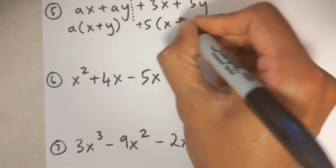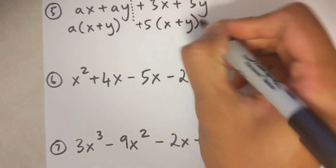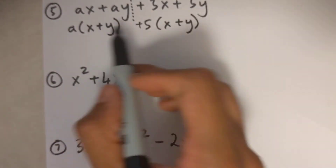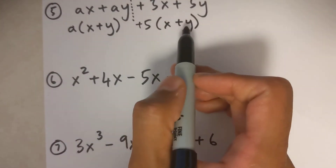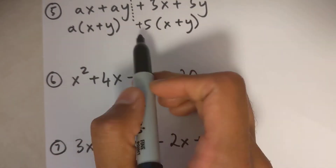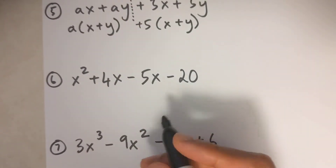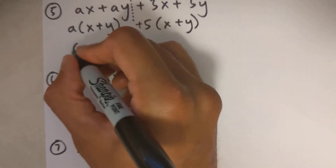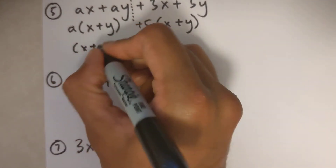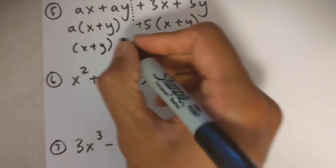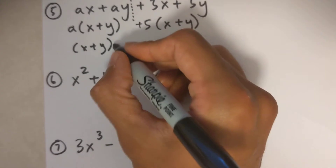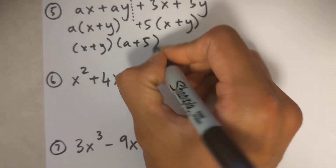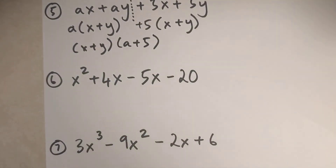I'm left with x plus y. Notice the two brackets are identical — now it looks like one of the previous questions. So I'm going to common factor out x plus y and I'm left with a plus 5 as my final solution.